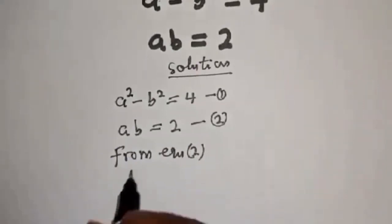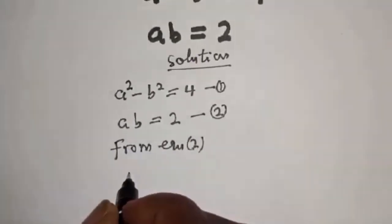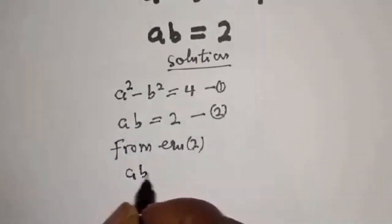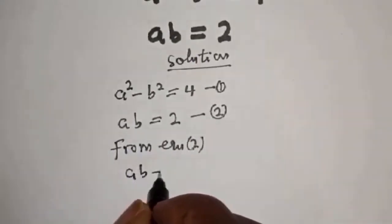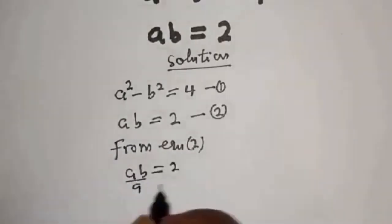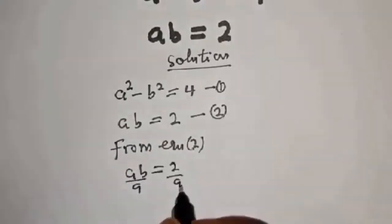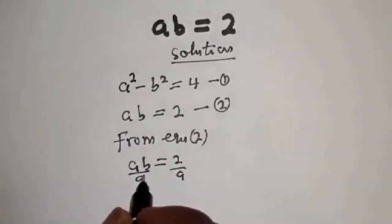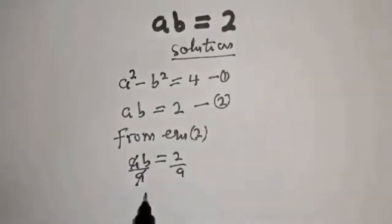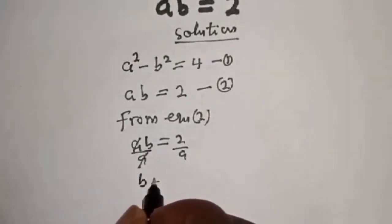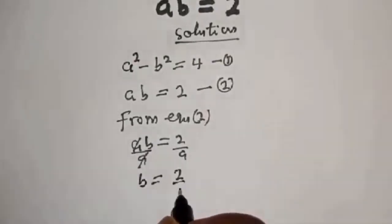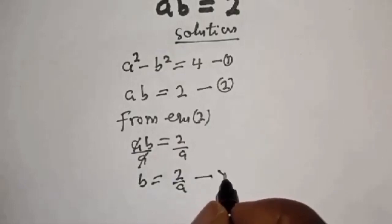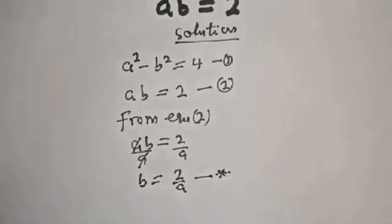From equation 2, let's make b the subject of the formula. So ab equals 2, divide both sides by a: b is equal to 2 over a. Let's call this equation star.